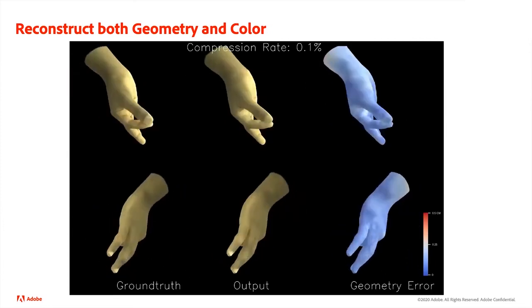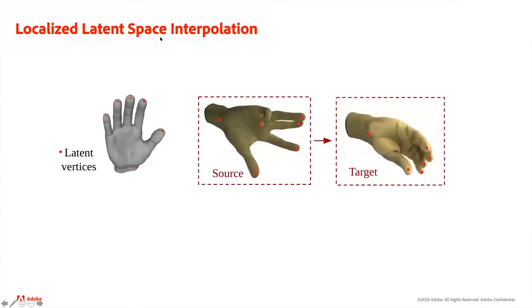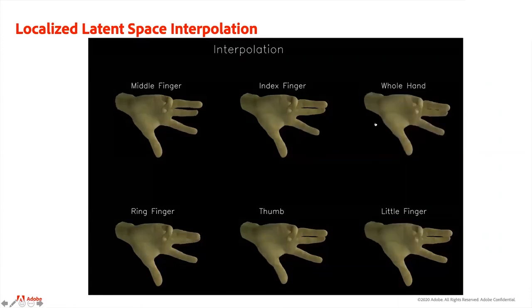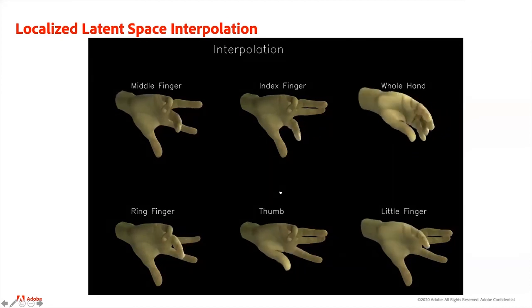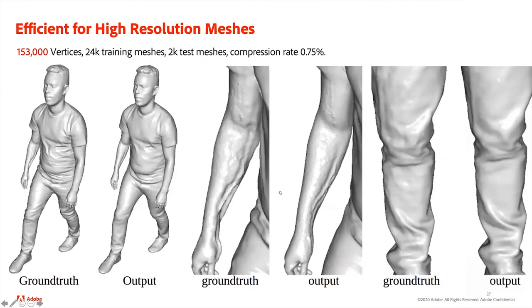This network can reconstruct any type of features defined on vertices, including geometry. We trained the network on a high-resolution 3D hand dataset. You can see it can reconstruct the hand pretty well. We also do localized interpolation on the hand example. The latent vertices are defined on the tip of each finger and on the wrist. Traditionally, people can only do global interpolation, but with our network we can interpolate not only for the whole hand but also interpolate the finger we want.